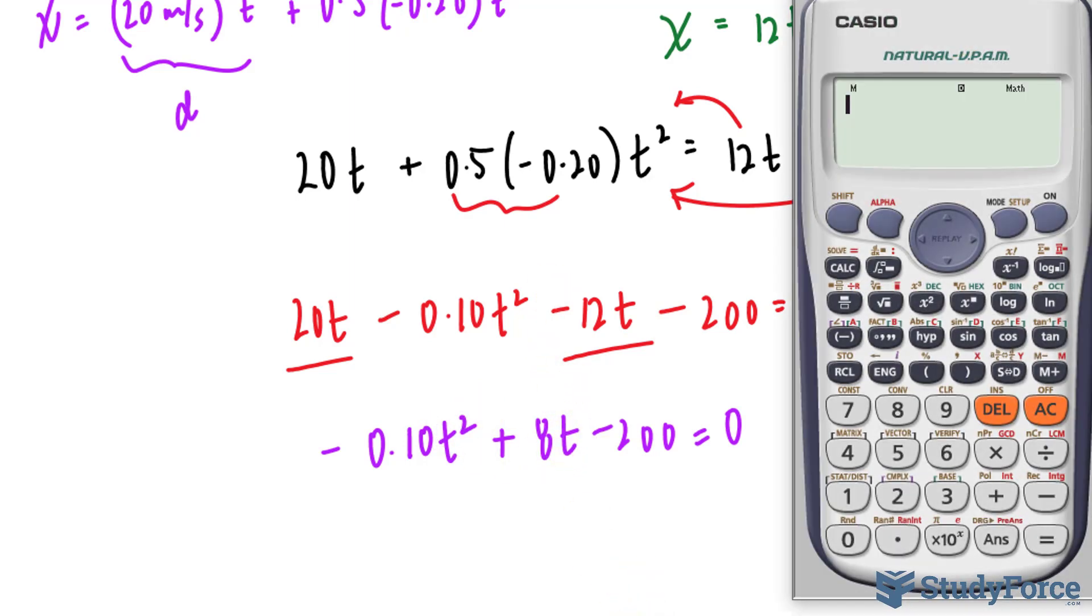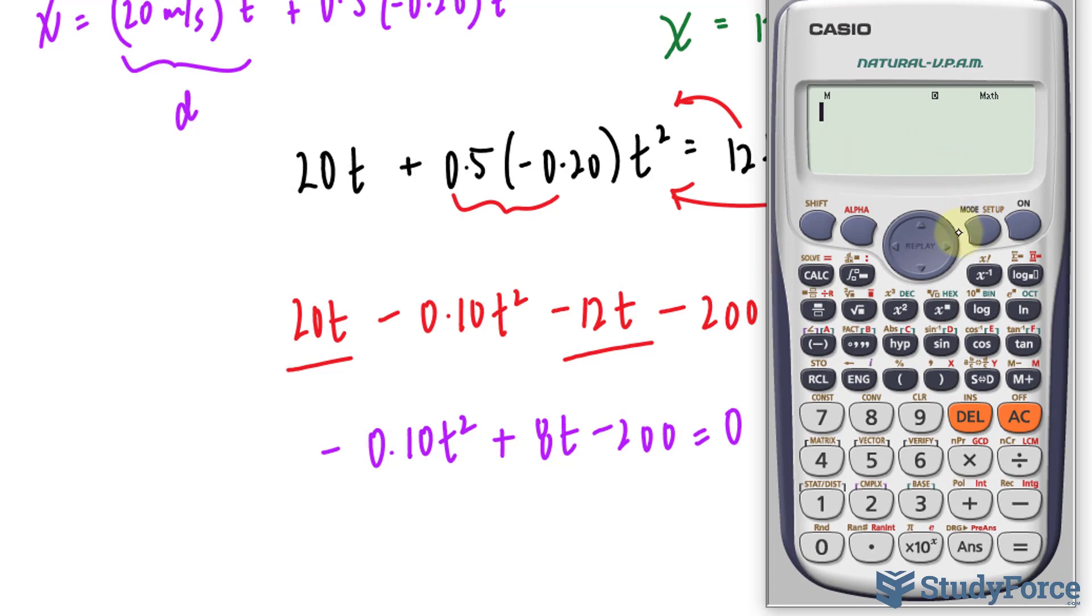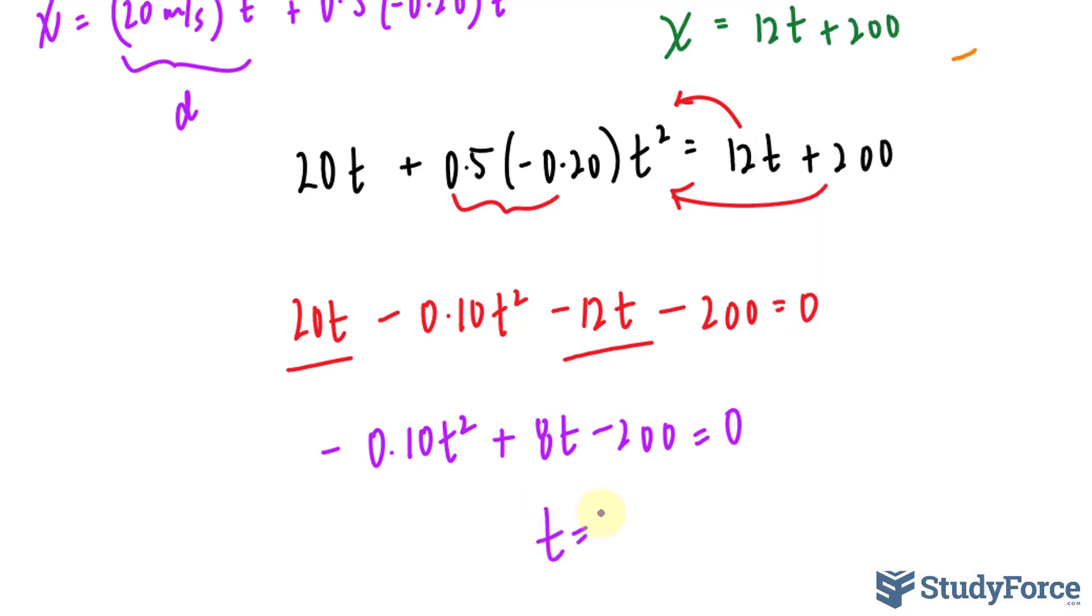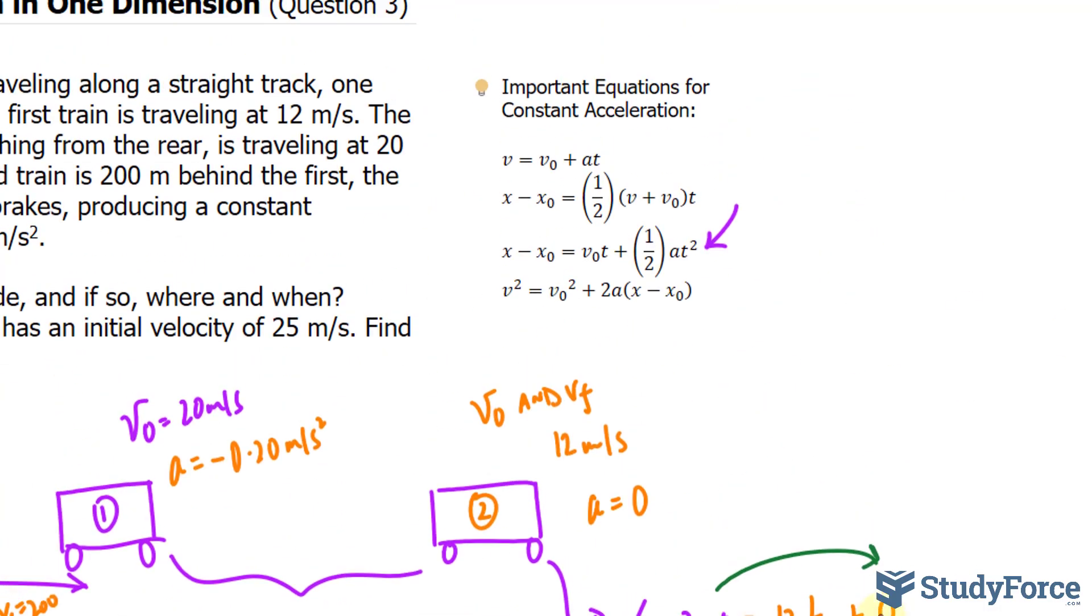This is a quadratic and so you would have to use the quadratic formula to find out what t is. Although there is a feature on most scientific calculators that enables you to find the roots of a quadratic. For me, you click mode 5, 3 and you type in negative 0.10, 8 and negative 200. Remember, if we get a t value, that means they collide. If we don't, then they don't collide. As you see, my calculator gives me an output with the letter i. This is imaginary letter i, which means that it's not a real root. Therefore, there is no value for t and the two trains do not collide.